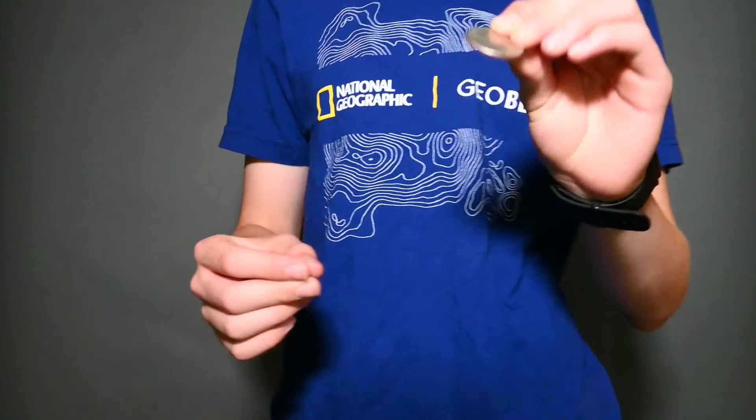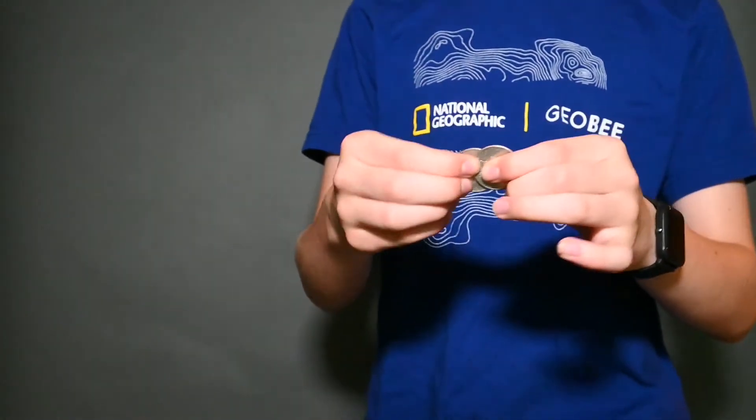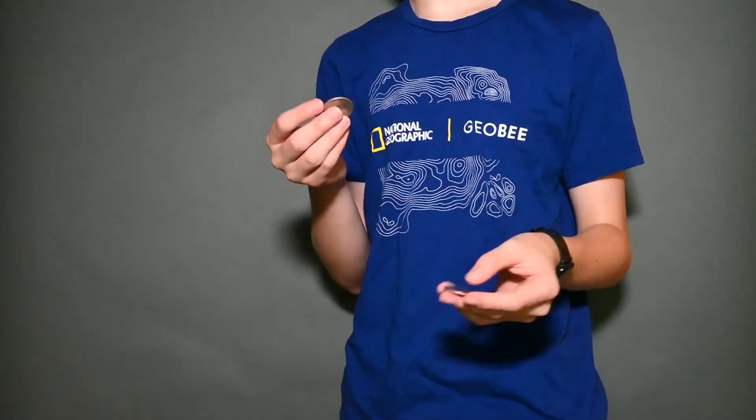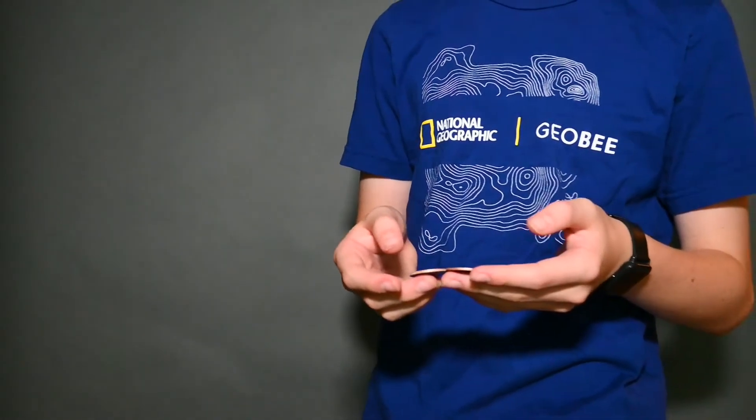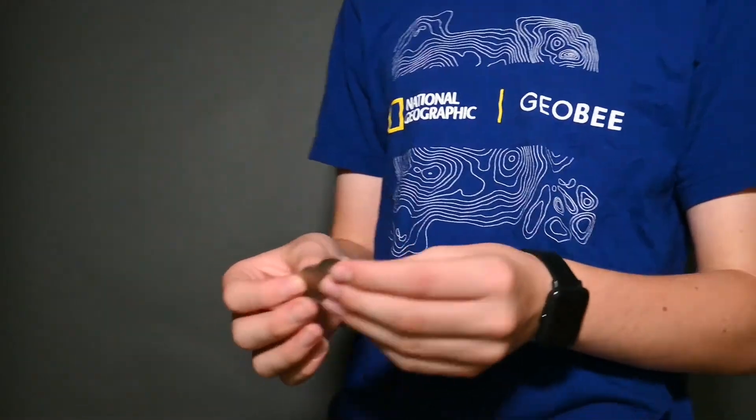Alright, so now for the magnetic coin trick. I love this one. I haven't put very much practice into it, but it doesn't really need that much practice as long as you can do the muscle pass. So first of all, you're going to take two half dollars, the same.